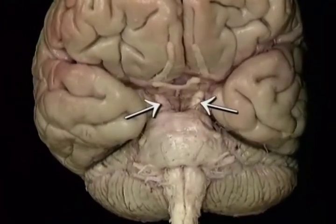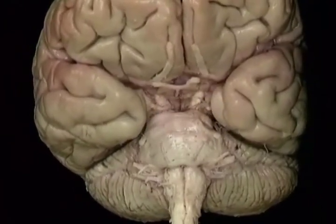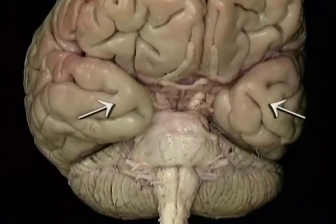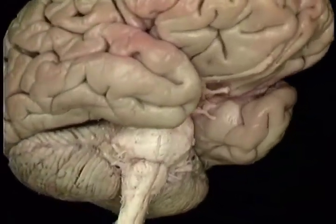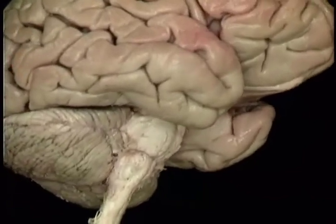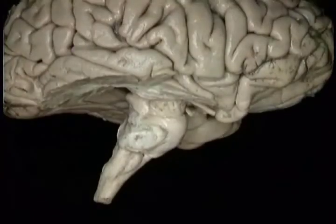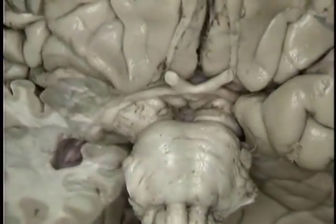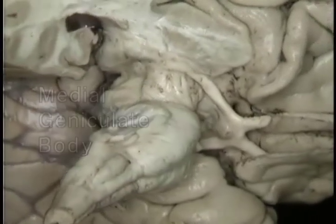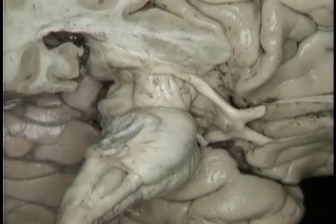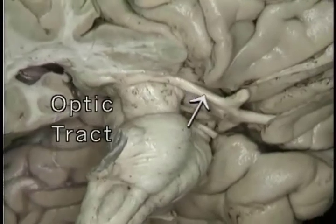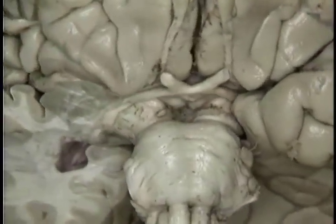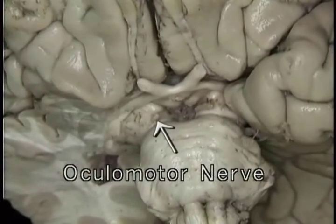Here are the cerebral peduncles in the intact brain. They're largely hidden by the lower parts of the cerebral hemispheres, the temporal lobes. To see the cerebral peduncles better, we'll look at a brain in which the temporal lobe and the cerebellum have been removed. Here are the cerebral peduncles again. Here on the outside of the cerebral peduncle are the medial geniculate body and the lateral geniculate body, which gives rise to the optic tract. Between the cerebral peduncles, the third cranial nerve, the oculomotor, emerges.